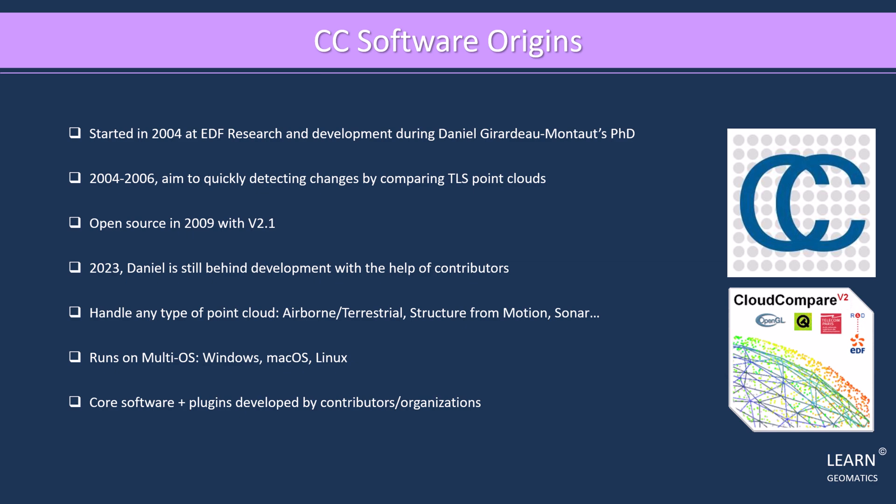Since then, many other point cloud processing algorithms have been added, including registration, resampling, color normal vectors, color fields management, statistics computation, sensor management, interactive or automatic segmentation, and more. Display enhancement tools such as custom color ramps, color and normal vectors handling, calibrated pictures handling, OpenGL shaders, and plugins are also available in Cloud Compare.